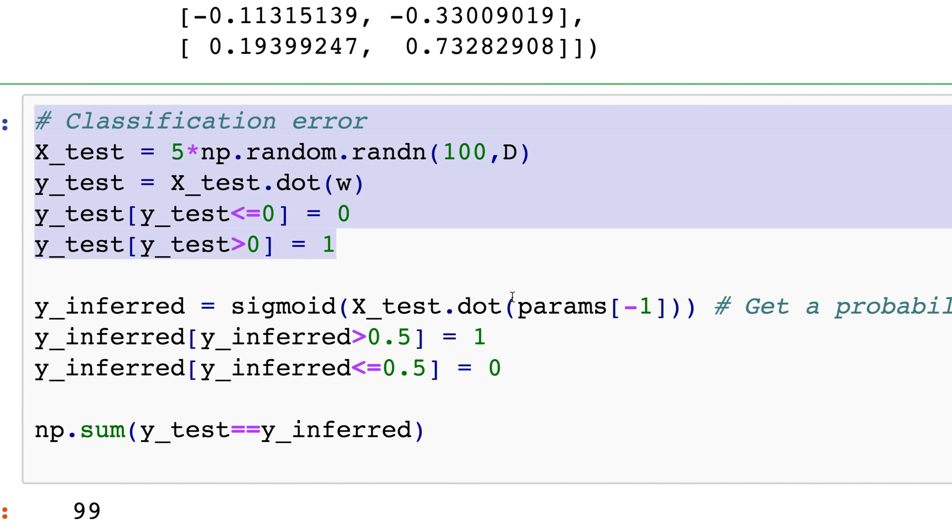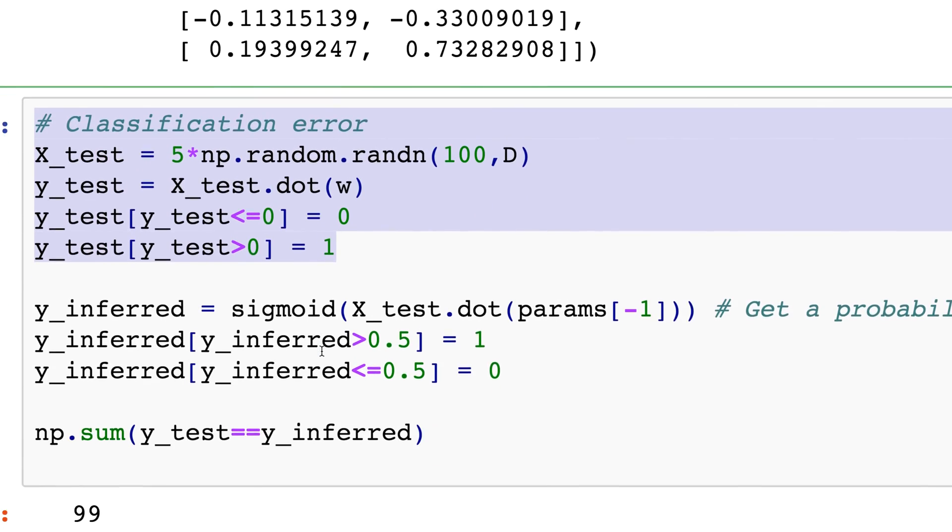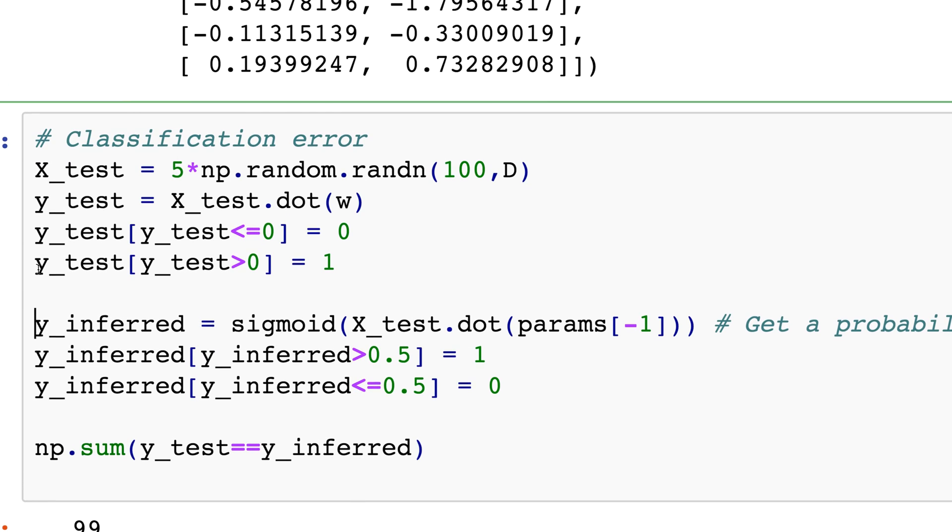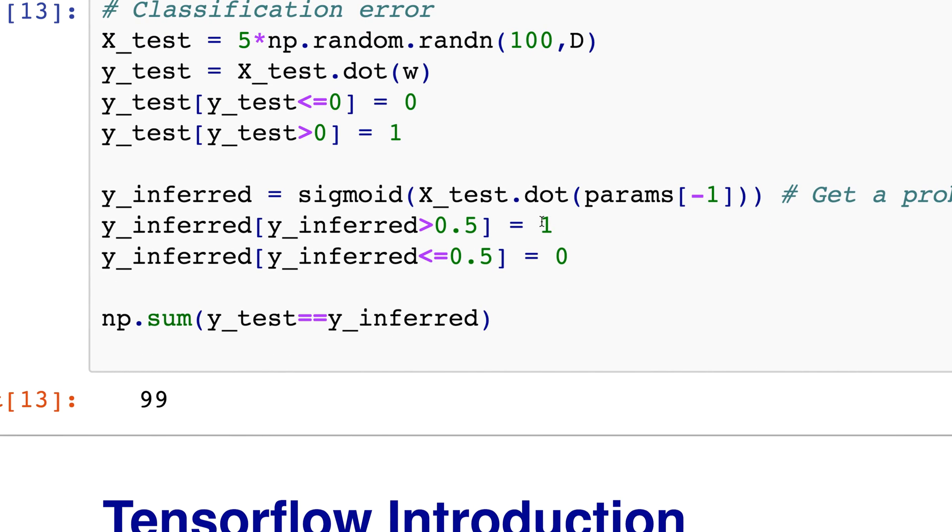x test dotted, so matrix multiply with my last weight. Okay, so params, the last parameters is the last weight that I figured out. And that's what this line is doing. And what I'm doing over here is I'm saying if it's greater than 0.5, set it to one. If it's less than 0.5, set it to zero.